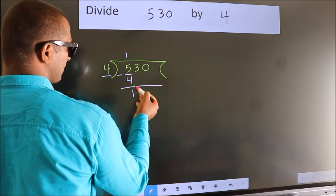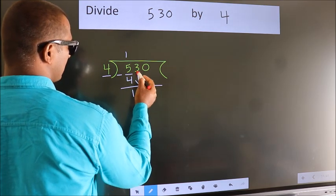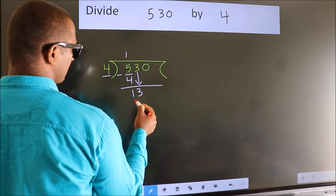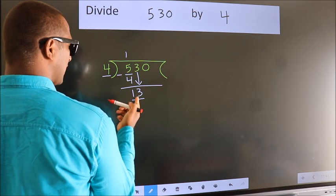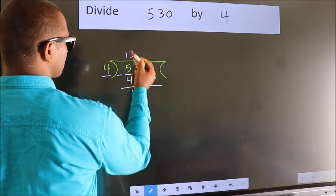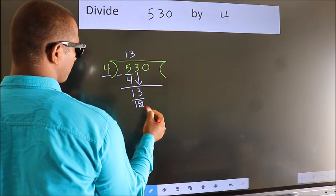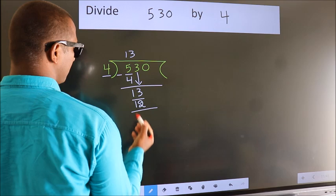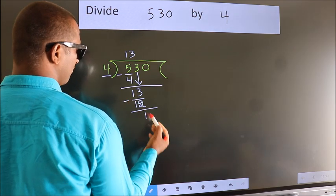After this, bring down the beside number, so 3 down, making 13. A number close to 13 in the 4 table is 4 threes, 12. Now we subtract. We get 1.